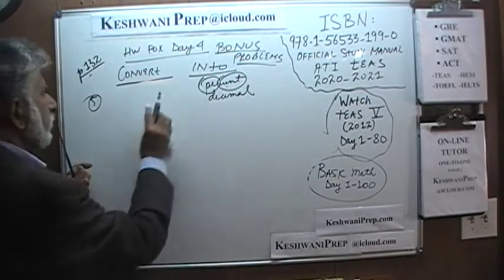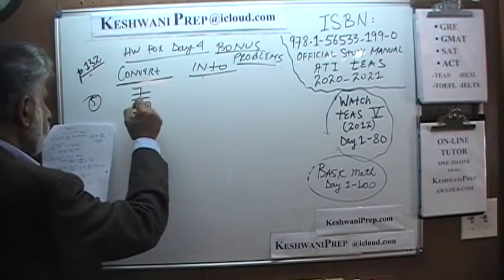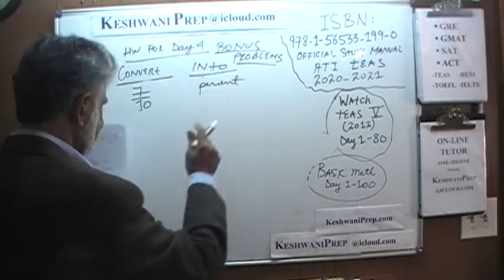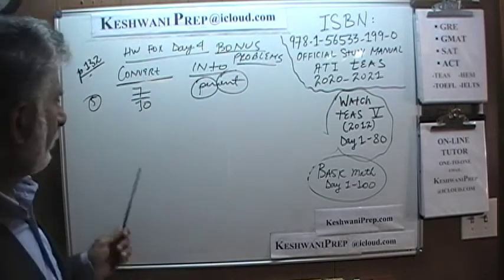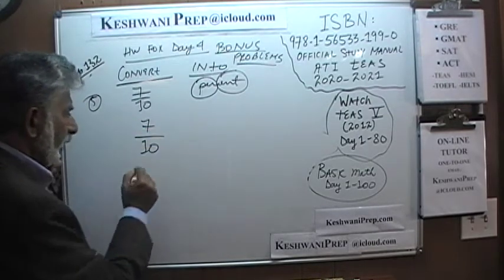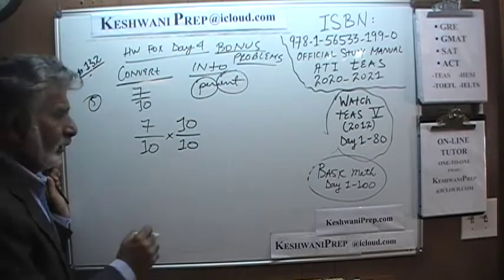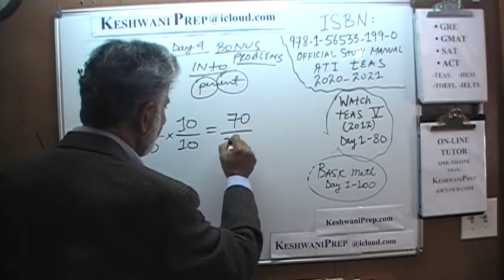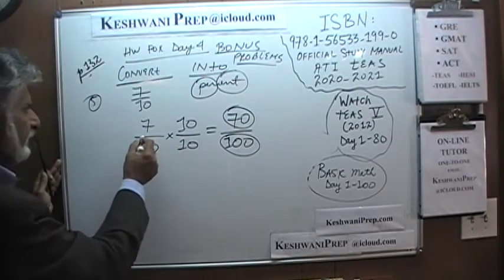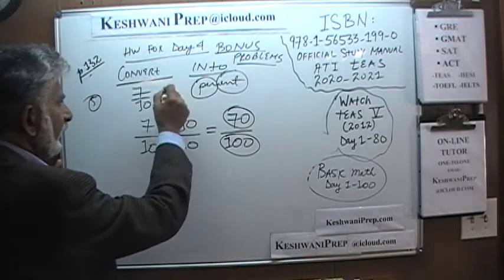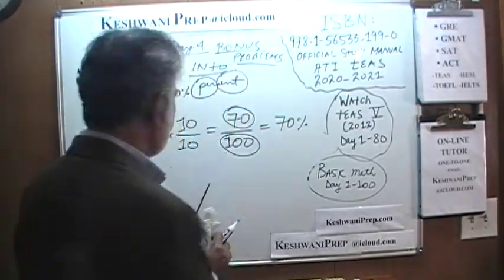Number 5: convert 7 tenths into percentage. Percent means out of 100, so we convert the bottom into 100. We have 7 tenths — multiply top and bottom by 10 to get 70 over 100. Now that we have 100 at the bottom, whatever we see on the top is the percentage. So 7 over 10 converted into percentage is exactly 70%. That was number 5.